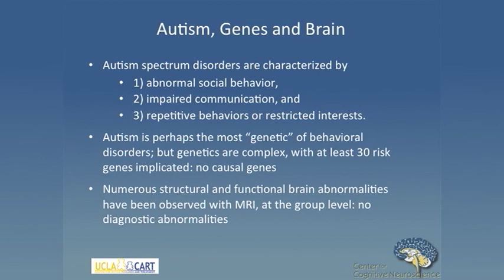I'm a brain imager, so I'm interested in functional and structural brain imaging. Numerous structural and functional brain abnormalities have been reported in autism, mostly at the group level. Very little has been done at the individual subject level that would allow us to do something diagnostic. But we can learn a lot about mechanism by studying the brain. Today I'm going to focus on how we can use imaging genetics as a way to link genes, behavior, and brain to understand the pathology and developmental trajectory of the disorder and how to approach interventions.